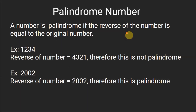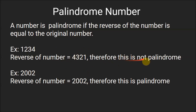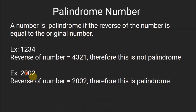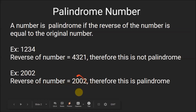So what is a palindrome number? A number is palindrome if the reverse of the number is equal to the original number. For example, if the number is 1234, then the reverse of the number will be 4321, so this is not a palindrome. If the number is 2002, then the reverse will also be 2002, which equals the original number, so this is a palindrome number.